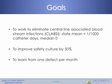Our goals are ambitious. They are to work to eliminate central line-associated bloodstream infections within your state — that is to get the mean rate of infection less than one per 1,000 catheter days and the median zero, to improve your safety culture by over 50%, and to learn from one defect per month. This sounds ambitious, but we've done this within the state of Michigan, we've done this within the Adventist health system, and we're completely confident that we can do it with your help in your state.